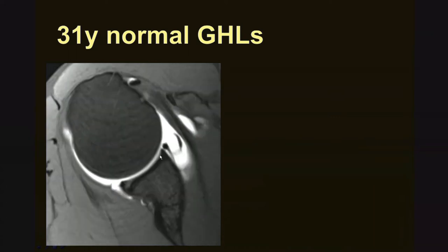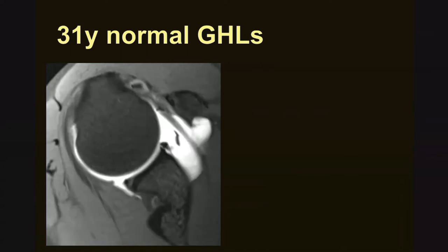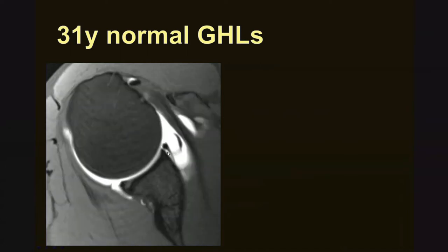In the anterosuperior location, the labrum shows developmental variations that can include sulci or a foramen. In this particular case, the labrum is completely undercut by contrast material. This is an arthrographic study, and all this white material represents contrast injected into the joint. In this location, this is not representative of a labral tear. Instead, this is a normal developmental variation — a sublabral sulcus or foramen.